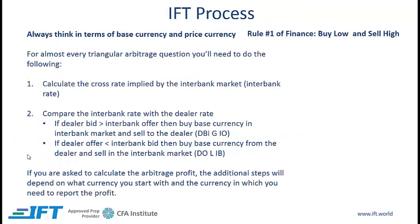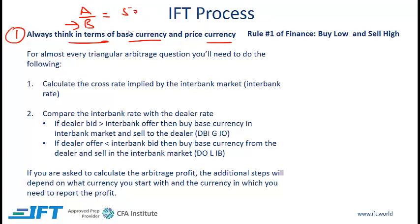First, the basic process. Number one: always think in terms of base currency and price currency. So if you have a currency pair A and B, A is the base currency and B is the price currency. Let's say that this rate is 50 — what that means is 50 units of A will buy one unit of B. The other thing to keep in mind is rule number one of finance: always buy low and sell high.